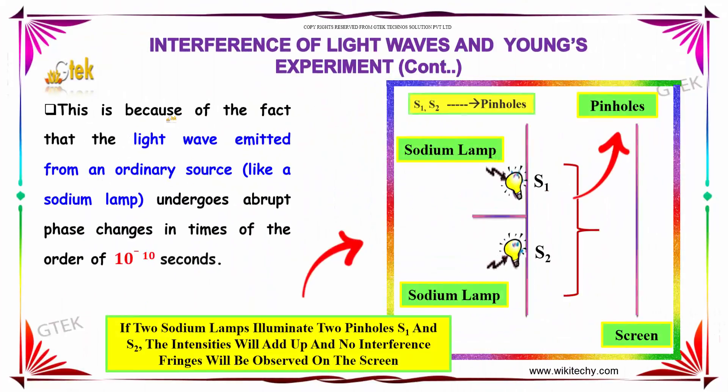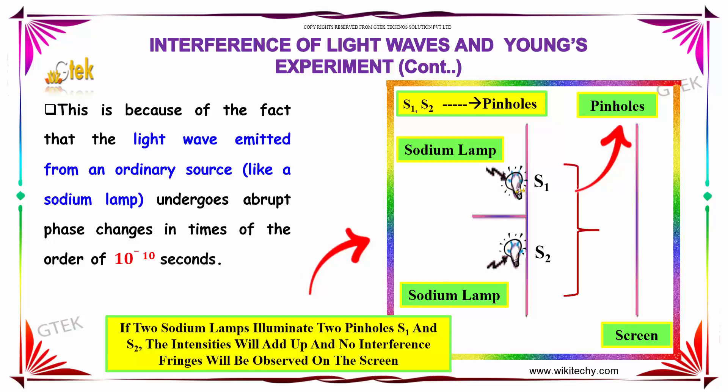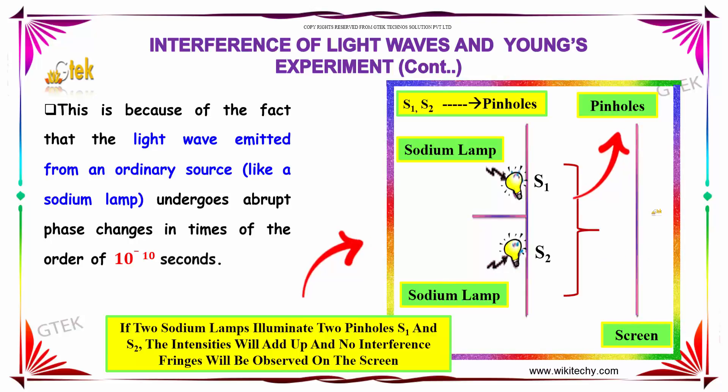This is because of the fact that the light wave emitted from an ordinary source undergoes abrupt phase changes in times of the order of 10 power minus 10 seconds.